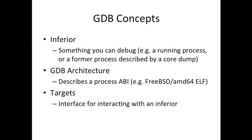GDB also has an abstraction for what I'll call a GDB architecture. You can think of it as a given ABI. There's a struct GDBarch — for example, the FreeBSD AMD64 ELF process would be one example, or a NetBSD AMD64 ELF, or a Linux i386. Those are all different ABIs, and a GDB architecture is kind of the class that defines ABI-specific behavior.